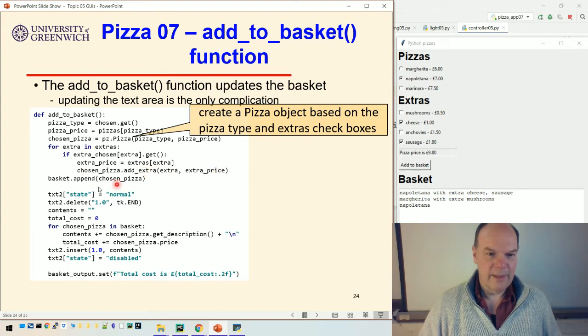Based on what the check boxes is set to. And then we add that chosen pizza to the basket. So this is when the users click the add basket button. Then this function gets called to add it to the basket.